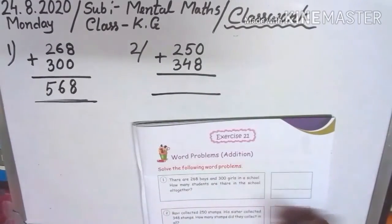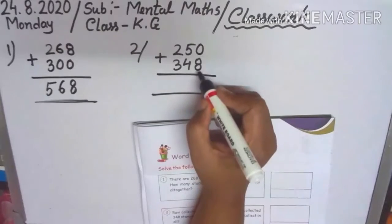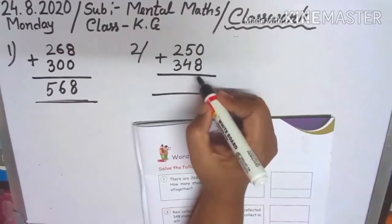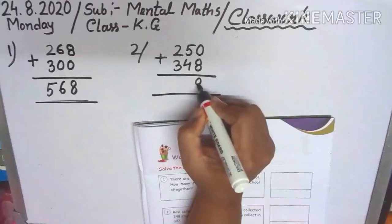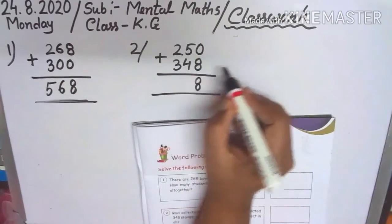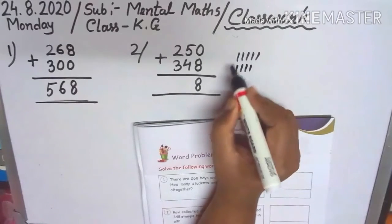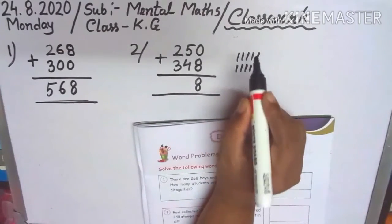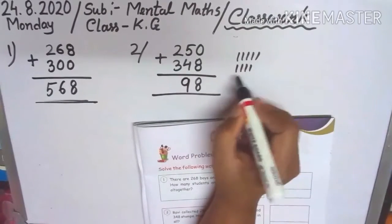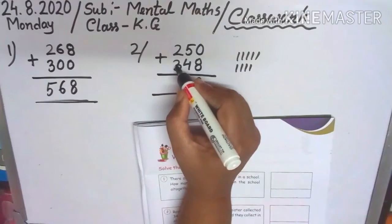So how many stamps did they collect in all? Total number of stamps. 0 plus 8, first 1's column you see 8. 5, 10's column 5 plus 4. 1, 2, 3, 4, 5 and 1, 2, 3, 4. Total 5, 4, 9. You count children. 100th column you see 2 plus 3, 5.